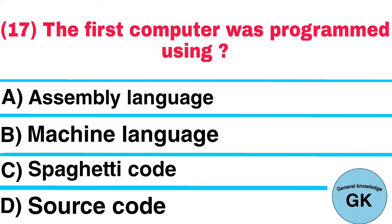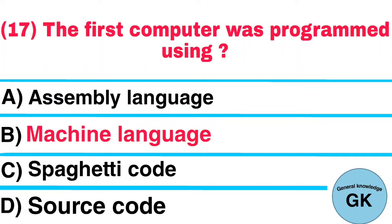Question number 17. The first computer was programmed using: A. Assembly language, B. Machine language, C. Spaghetti code, D. Source code. Answer: Machine language.